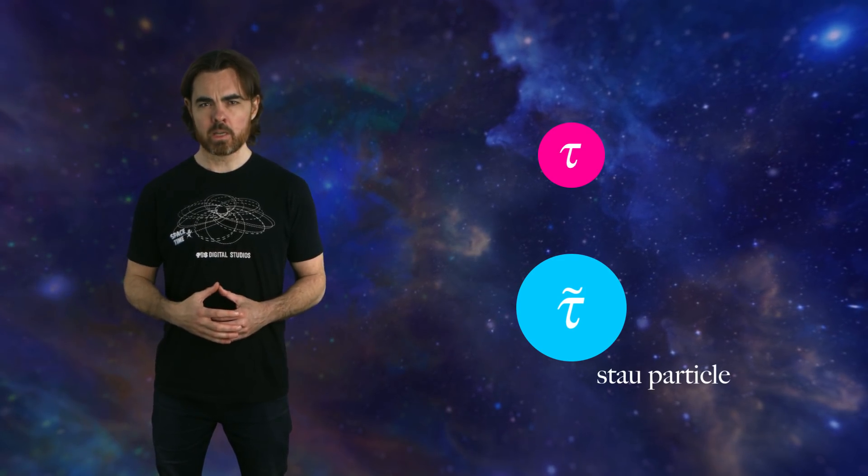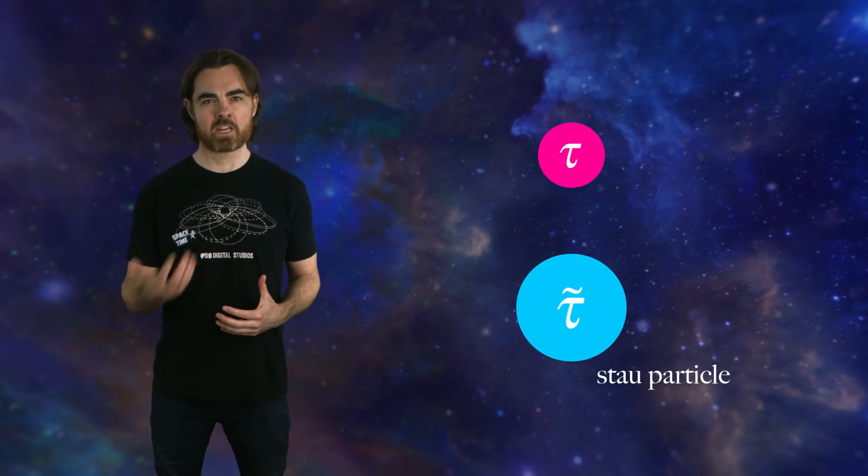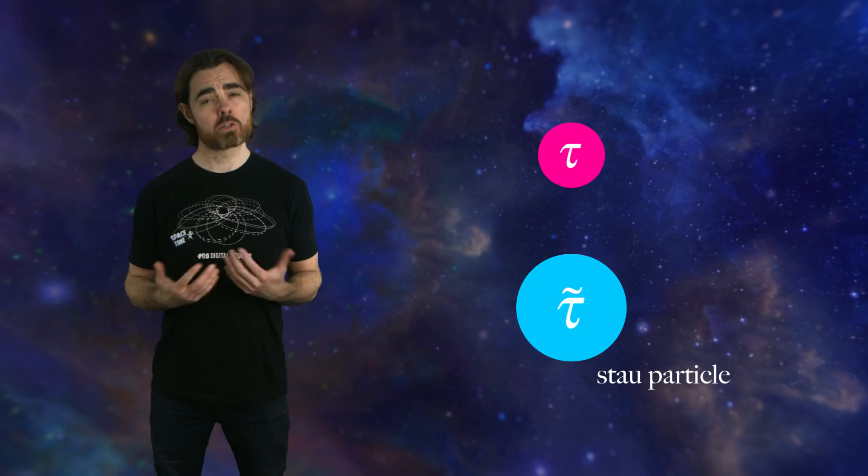Astrophysicist Derek Fox, Stein Sigurdsson, and team point out that there's a version of supersymmetry that predicts exactly the right particle to do this job. It's the supersymmetric partner of the tau lepton. The stau particle. Yeah, you put an S in front to get the SUSY particle. Selectron, squark, stau. Supersymmetry is super easy.